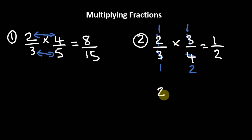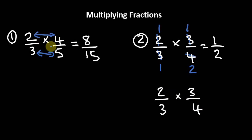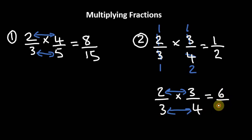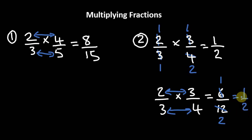However, we could also just carry out the multiplication directly. Taking 2/3 times 3/4, we multiply the numerators: 2 times 3 is 6, and the denominators: 3 times 4 is 12. We then reduce 6/12 — 6 goes into itself once and 6 goes into 12 twice — giving us 1/2, the same answer. Here we multiplied first and reduced at the end, while before we reduced first then multiplied.